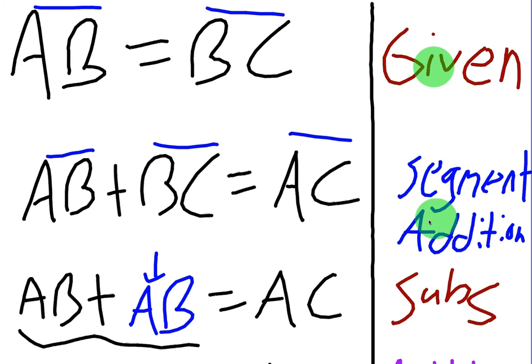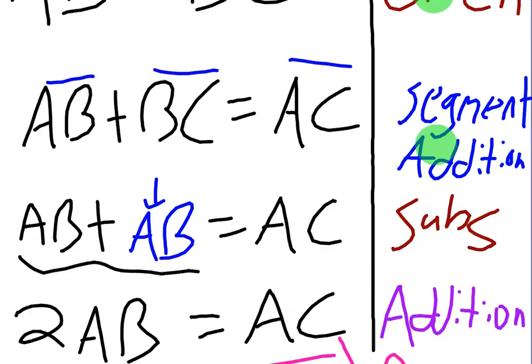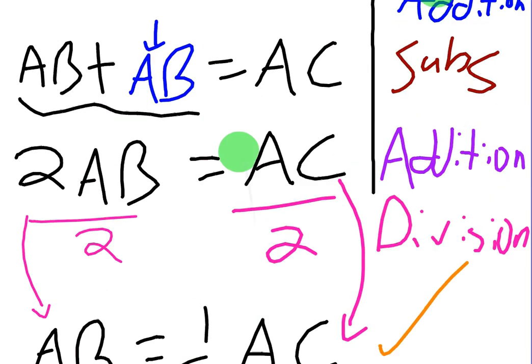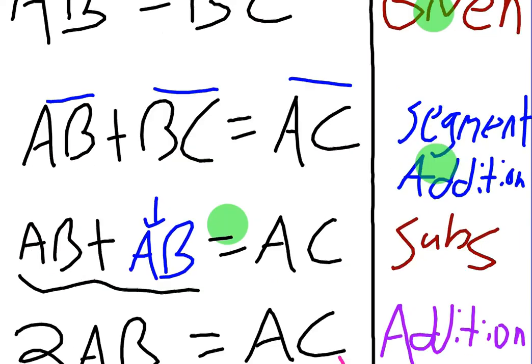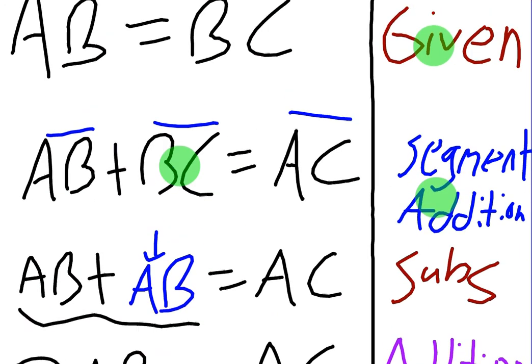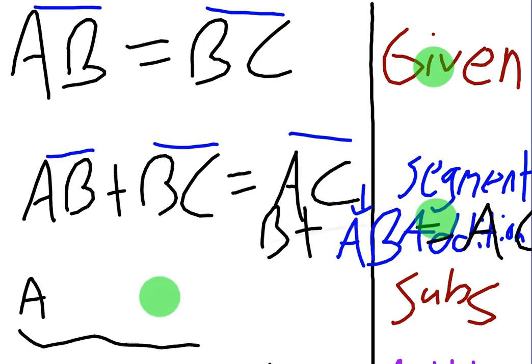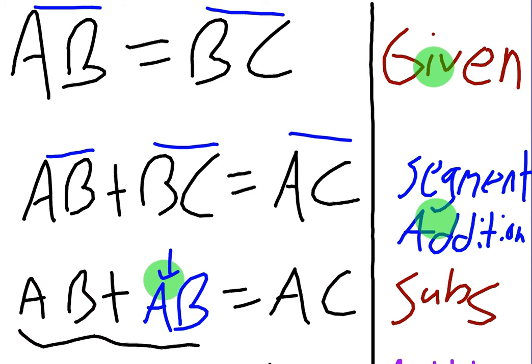So next we want to move on to proving down here that AB is equal to half AC. So we only want two segments in our final proof. So we need to get rid of one, right? We need to get rid of which one? Well, the BC, right? And since we only want AB in our answer, we know that BC is equal to AB. We're going to go ahead and just substitute it. We're going to replace BC with AB and our reason is substitution.